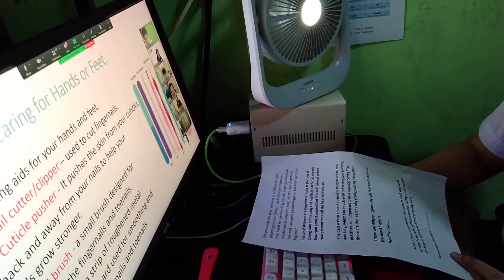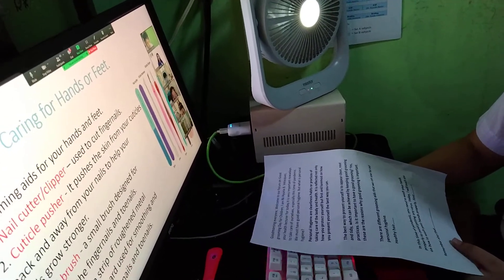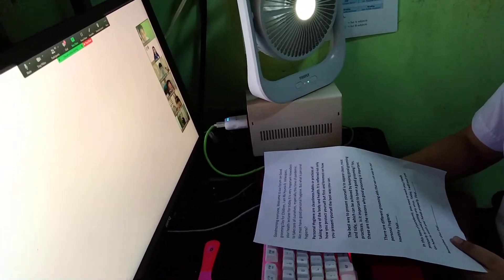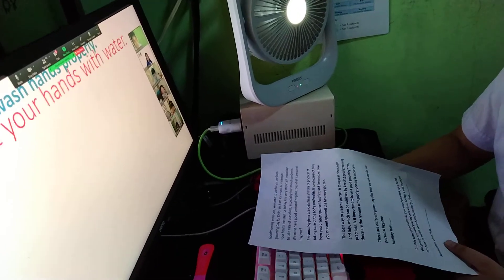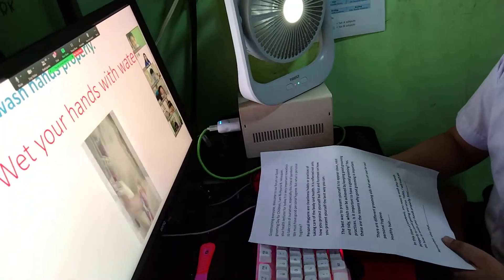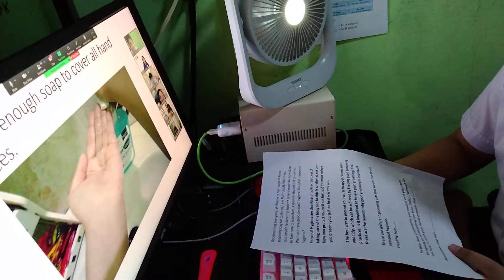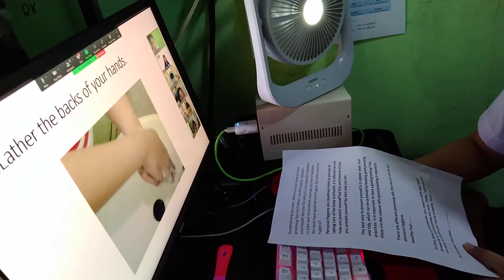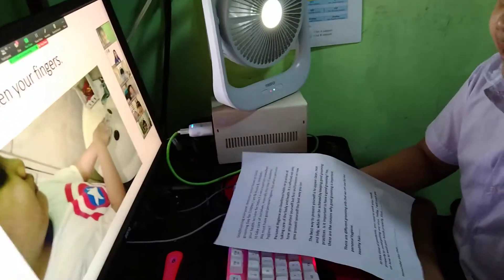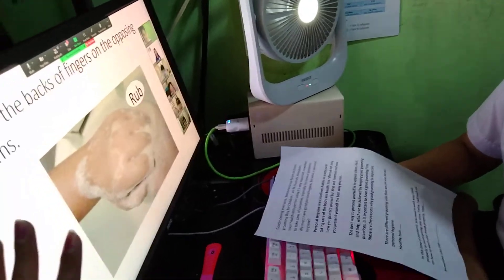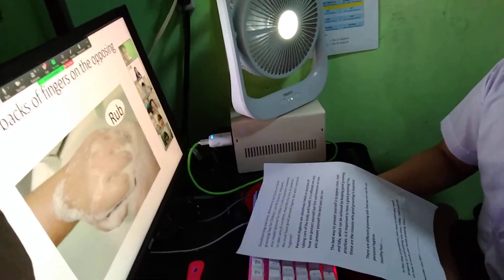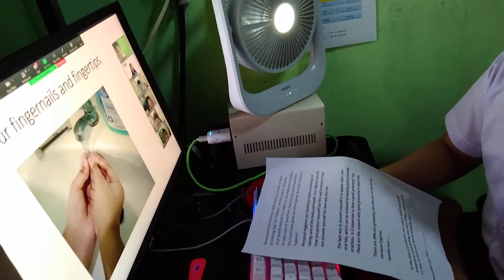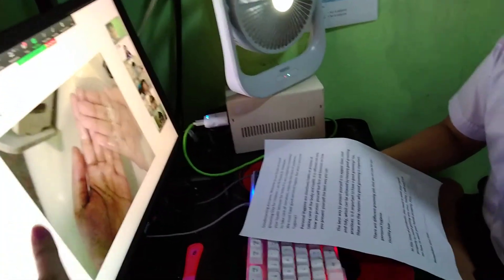In this time of pandemic, you need to wash your hands properly to avoid getting any viruses. Today, I will teach you on how to wash your hands properly. First, wet your hands with water. Second, apply enough soap to cover all hand surfaces. Third, rub your hands palm to palm. Fourth, lather the backs of your hands. Scrub between your fingers. Rub the backs of your fingers on the opposing palms. Clean your thumbs. Wash your fingernails and fingertips. And rinse your hands.